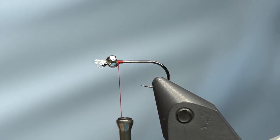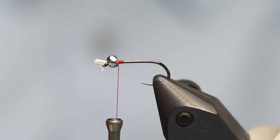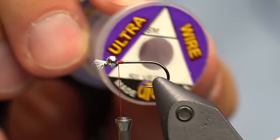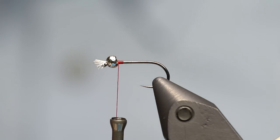Get rid of the tie-in excess there. Same thread, still UTC 70 in red. The next step is to take some small silver wire. We're going to wrap down the shank.